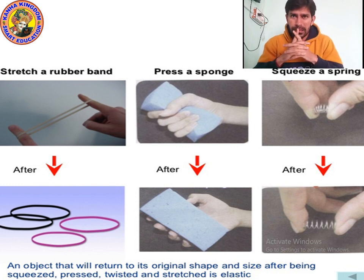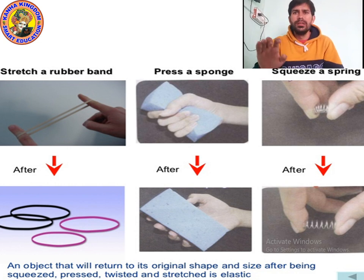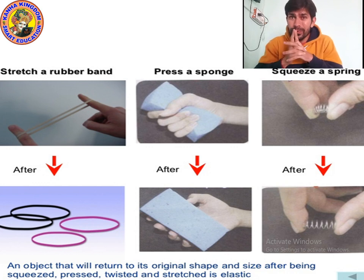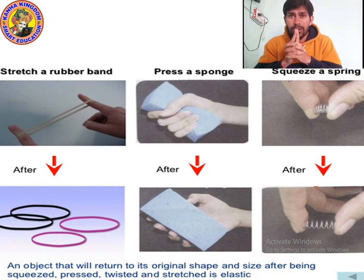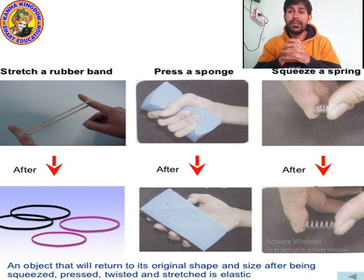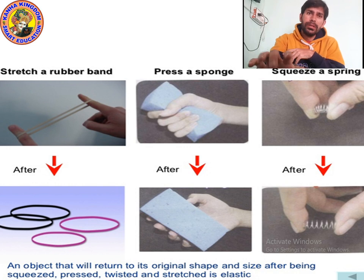Let's address a misconception: that when you apply force on an object, it will never return to its original shape. This is wrong. An object can be returned to its original shape and size even after being squished, pressed, twisted, or stretched.